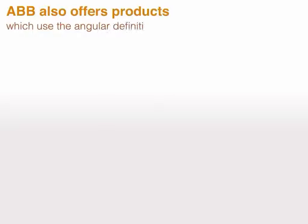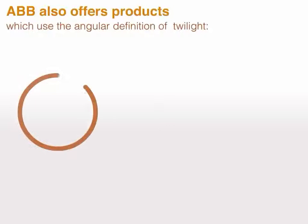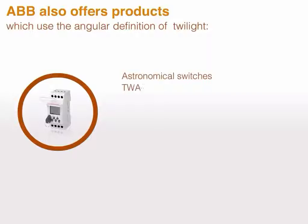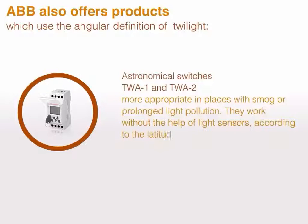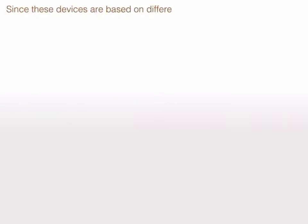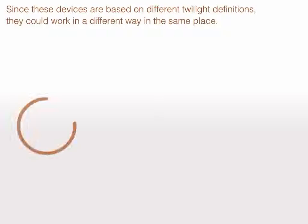ABB also offers products which use the angular definition of twilight: astronomical switches TWA1 and TWA2, more appropriate in places with smog or prolonged light pollution. They work without the help of light sensors, according to the latitude and longitude parameters of their location. Since these devices are based on different twilight definitions, they could work in a different way in the same place.